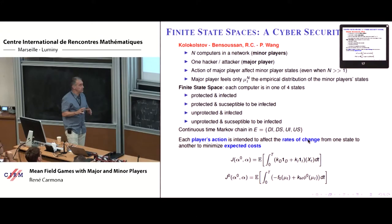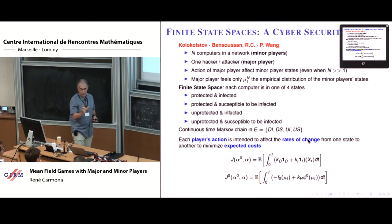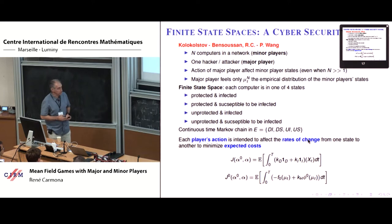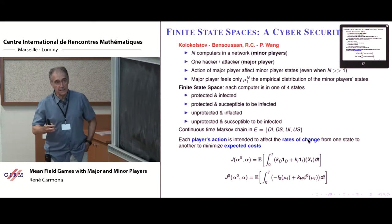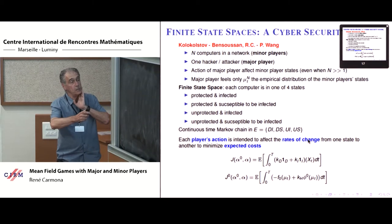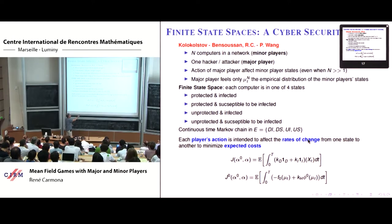Now I want to finish with another example, borrowed from a paper by Kolokoltsov and Alain Bensoussan — a botnet cyber security model. This could also be a model of infection or disease. Now we do not have a stochastic differential equation; instead, the state space has four states: DI (defended and infected), DS (defended and susceptible), UI (undefended and infected), and US (undefended and susceptible).